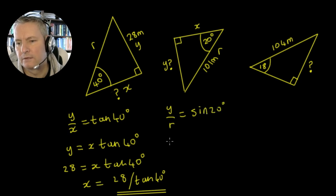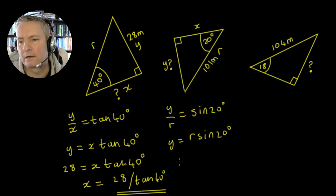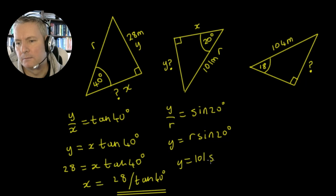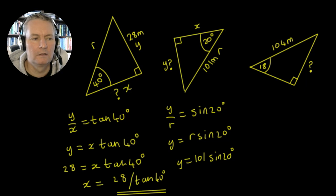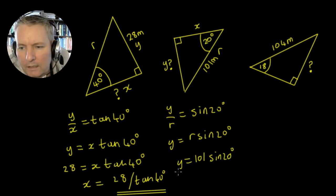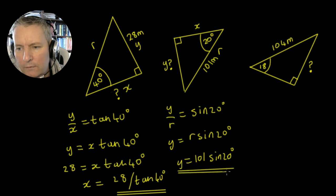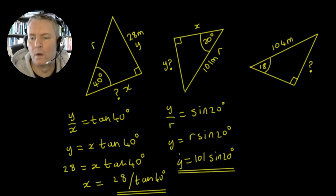We can say that y is going to equal r sin 20 degrees. We already have the value of r, so y is going to equal 101 times the sin of 20 degrees. We want to put this into the graphical calculator and check the value of y.